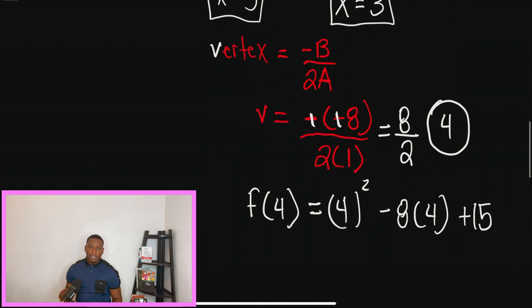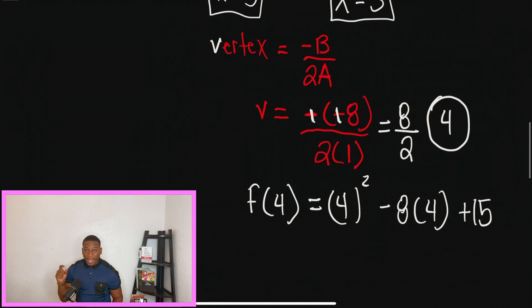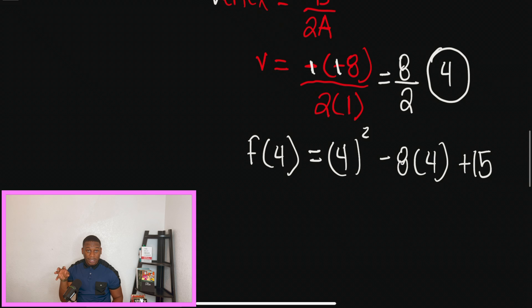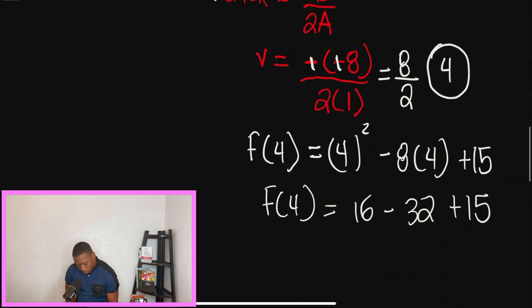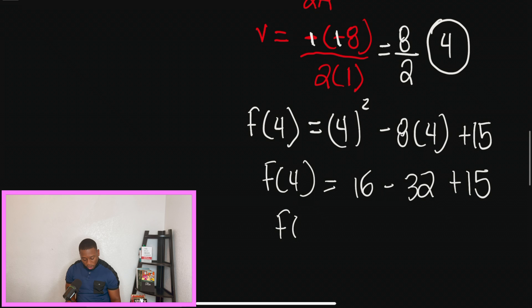And now we're going to substitute and solve. So we have 4 squared minus 8 times 4 plus 15. So we're now plugging in the x value from the vertex because that value is an x, and we're now going to get y. So once we plug that 4 in, we're going to get 16 minus 32 plus 15.